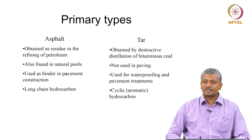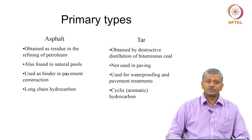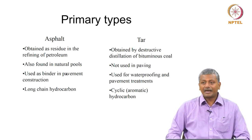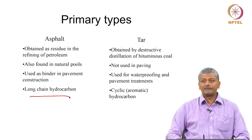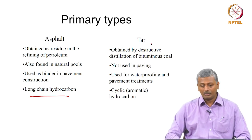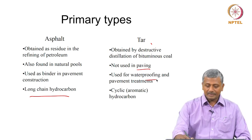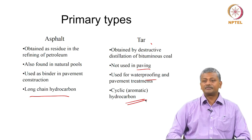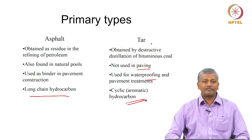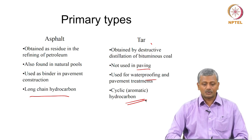To distinguish asphalt and tar: asphalt is obtained as a residue in the refinement of petroleum, may also be found in natural pools, and is used as a binder in pavement construction. It is a long-chain or aliphatic hydrocarbon of high molecular weight. Tar, on the other hand, is obtained from destructive distillation of bituminous coal, is not used in paving but in waterproofing and pavement treatments, and is a cyclic or aromatic hydrocarbon.